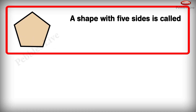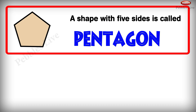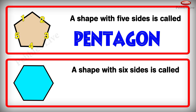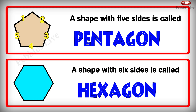A shape with 5 sides is called a pentagon: 1, 2, 3, 4, 5. A shape with 6 sides is called a hexagon: 1, 2, 3, 4, 5, 6.